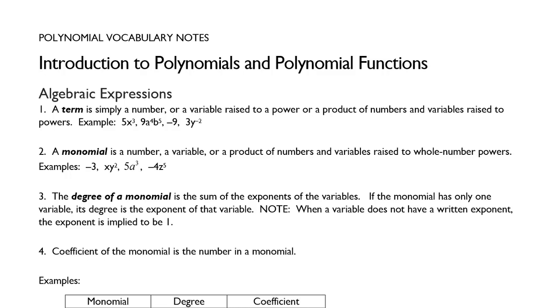Some examples of that would be negative 3, xy to the 2nd, 5a to the 3rd, or negative 4z to the 5th. These are all examples of monomials, meaning there's one term.